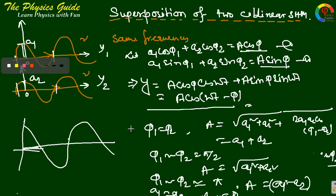The minimum amplitude goes to zero when a1 = a2. So if φ1 − φ2 = π and a1 = a2, then A = 0 — the two simple motions completely destroy each other. These are the basic conditions for the superposition of simple harmonic motions.